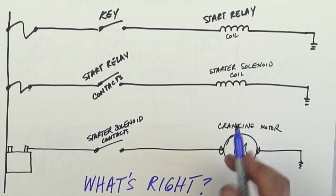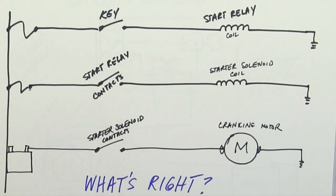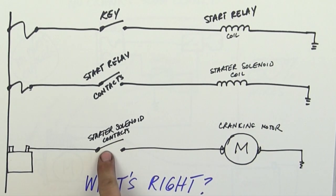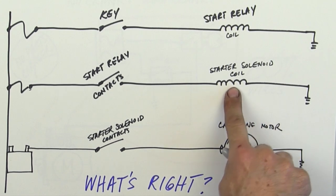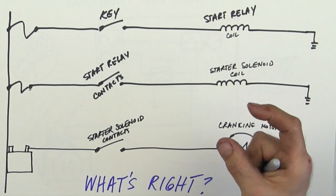So let's talk about this for a second. The first thing I want you to understand is that all three of these circuits are identical. This has bigger wire. Those contacts are inside the solenoid.